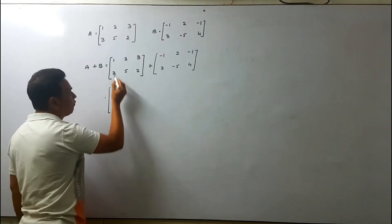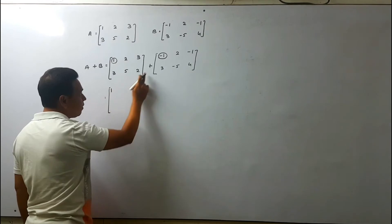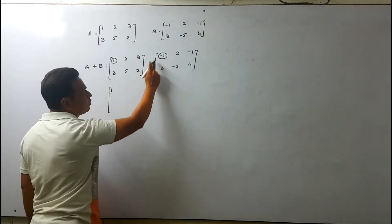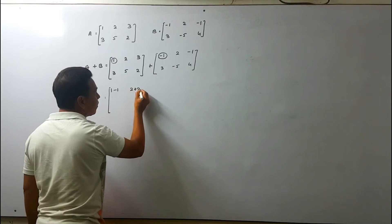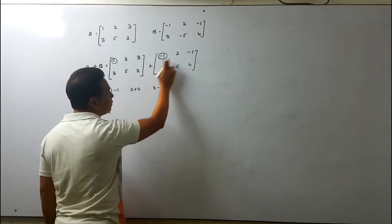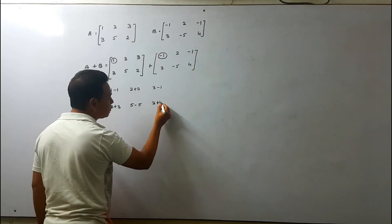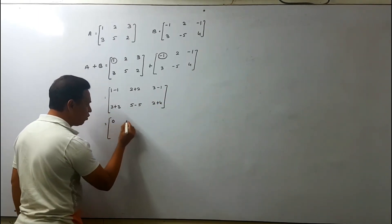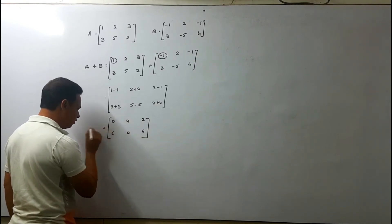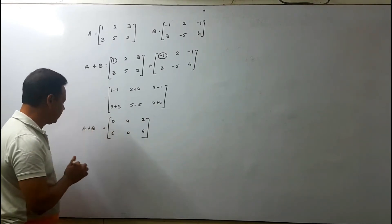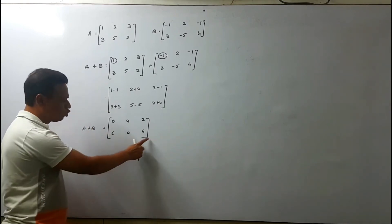We add corresponding elements: 1 plus minus 1 equals 0, 2 plus 2 equals 4, 3 plus minus 1 equals 2, 3 plus 3 equals 6, 5 minus 5 equals 0, and 2 plus 4 equals 6. So A plus B equals the matrix [0, 4, 2; 6, 0, 6]. Since both matrices are 2 by 3, the answer remains a 2 by 3 matrix.